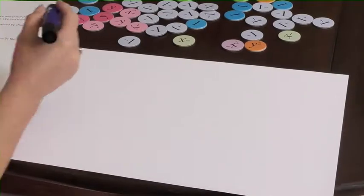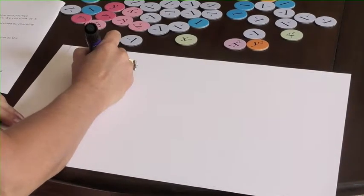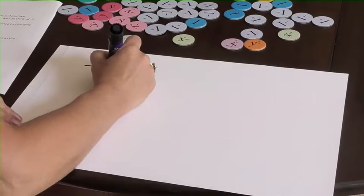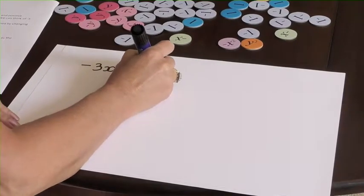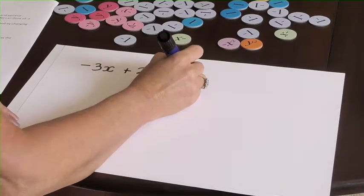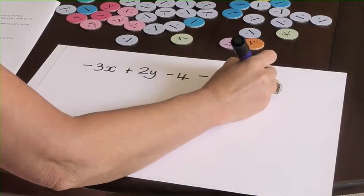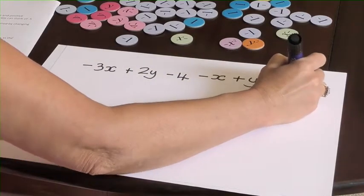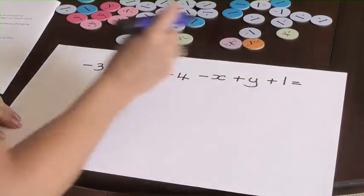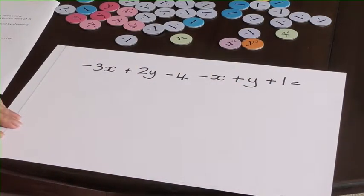Let's have a look at one more. We've got negative 3x plus 2y, negative 4, negative x plus y plus 1. Let's evaluate that and see what that is equivalent to.